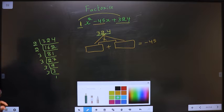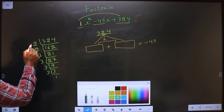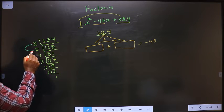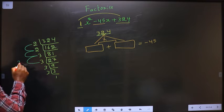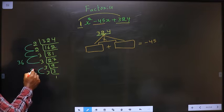So now the 2 numbers will be: 2 into 2 is 4, 4 into 3 is 12, 12 into 3 is 36, and 3 into 3 is 9.